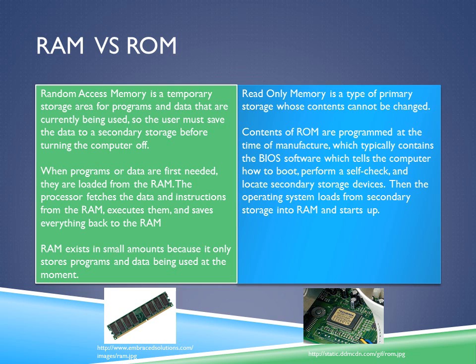RAM versus ROM. Random Access Memory, or RAM, is a temporary storage area for programs and data that are currently being used, so the user must save the data to a secondary storage device before turning the computer off. When programs or data are first needed, they are loaded from RAM. The processor fetches the data and instructions from RAM, executes them, and then saves everything back to RAM. RAM exists in small amounts compared to secondary storage alternatives because it only stores programs and data being used at the moment.